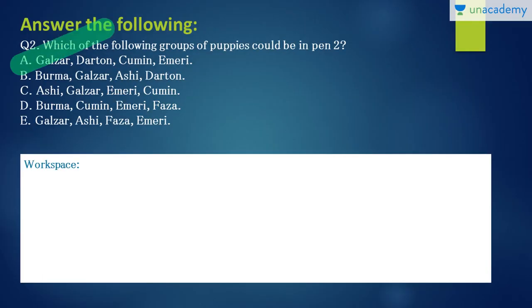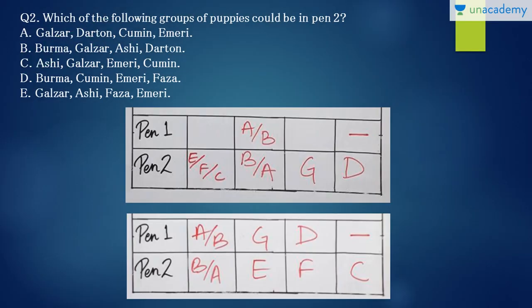Question 2. Which of the following groups of puppies could be in pen 2? Okay, so let us see. Now the option in the first question is invalid for this question, which means Emeri and Faza need not be in different pens. This is a different question and that question was just a part of that. It was not a part of the main question. So we won't use that option here. So there are just two conditions now. That is A and B can't be together and G and D has to be together. So we'll use just those two options and see how we can fill the tables.